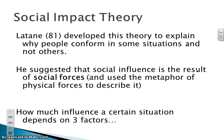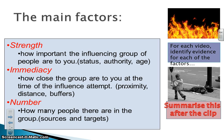Social Impact Theory is related to other things as well, like bystander apathy — people walking past those who are injured in the street — but particularly we're looking at it in terms of obedience. How much influence a certain situation or group of people has on you depends on three different factors: strength, immediacy, and number.